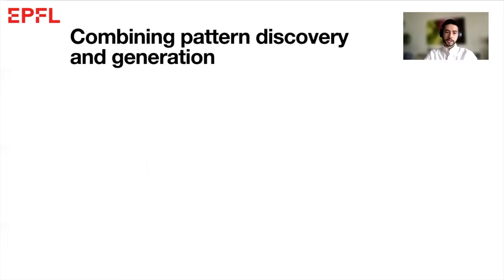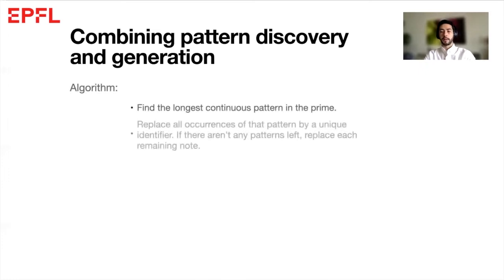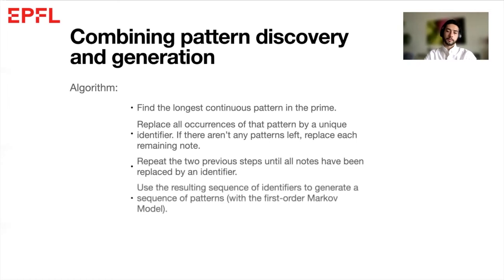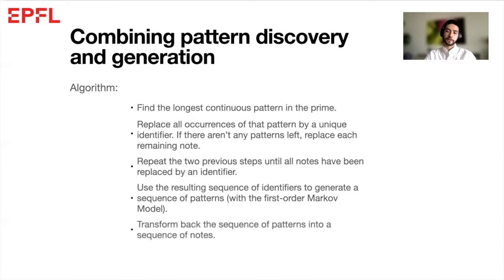The process is actually fairly simple. First, we need to find the longest continuous pattern in the prime, then replace all the repetitions of that pattern by a unique identifier. And if there are no patterns left, replace each of the remaining notes by an identifier. We then repeat the two previous steps until all the notes have been replaced by an identifier. Now, using the first-order Markov model on the resulting sequence of identifiers, we can try to generate a continuation. And last but not least, we need to transform back the sequence of patterns into a sequence of notes.